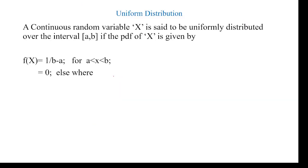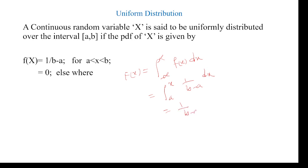If we want to calculate the distribution function, we know that F(x) equals the integration from minus infinity to plus infinity of f(x) dx. The integration of the density function gives the distribution — already discussed in previous topics. So the limits are from a to x of f(x), which is 1/(b − a) dx. Taking 1/(b − a) outside, the integration of 1 is x, evaluated from a to x.